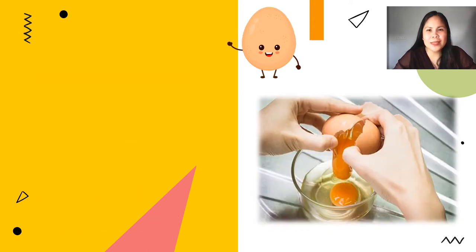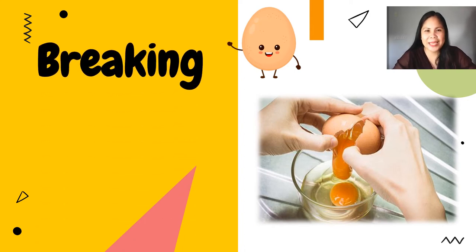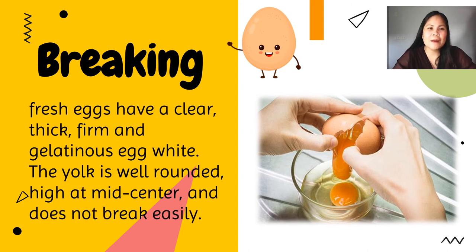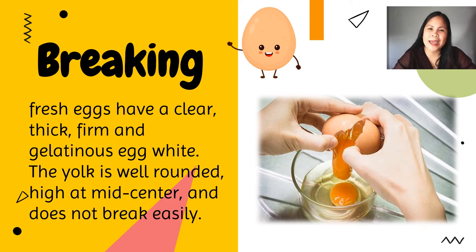For our last method in determining the freshness of eggs, we have breaking. Fresh eggs have a clear, thick, firm, and gelatinous egg white. The yolk is well-rounded, high at mid-center, and does not break easily. The yolk is small and rounded and stands high in a thick, gel-like egg white which tends to stay compact rather than spread out. As eggs age, the yolk absorbs water from the white and becomes larger and flatter. The thick egg white becomes thin and runny, and the egg might also develop a stale odor and flavor.